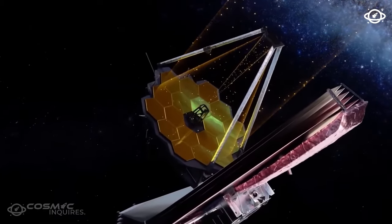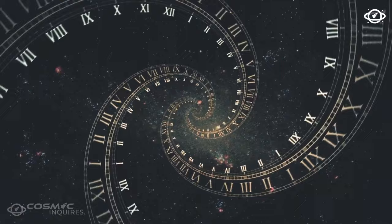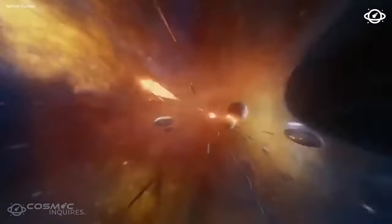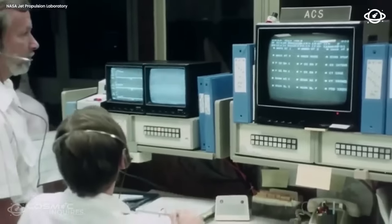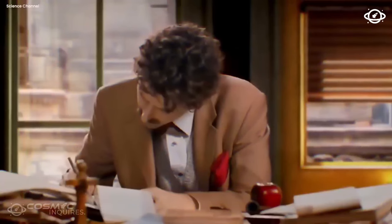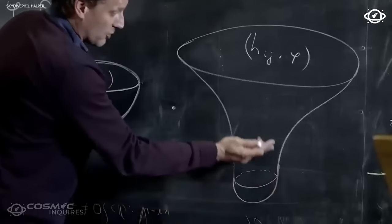According to Einstein's theory of general relativity, these gravitational fields can bend the path of light, causing it to follow curved trajectories rather than straight lines. This gravitational lensing effect was first predicted by Einstein and has since been confirmed through numerous observations. It is a fundamental principle of modern astrophysics and plays a crucial role in our ability to study distant objects.